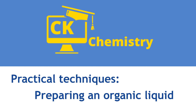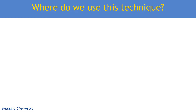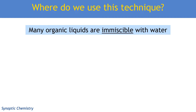This practical technique video is going to look at the details of preparing an organic liquid. So where do we use this technique? Organic liquids are often immiscible with water, meaning they're not water soluble, so they don't mix. This is usually because they are relatively non-polar or don't contain enough hydrogen bonding to mix with water. So we can use this technique in more than one place.